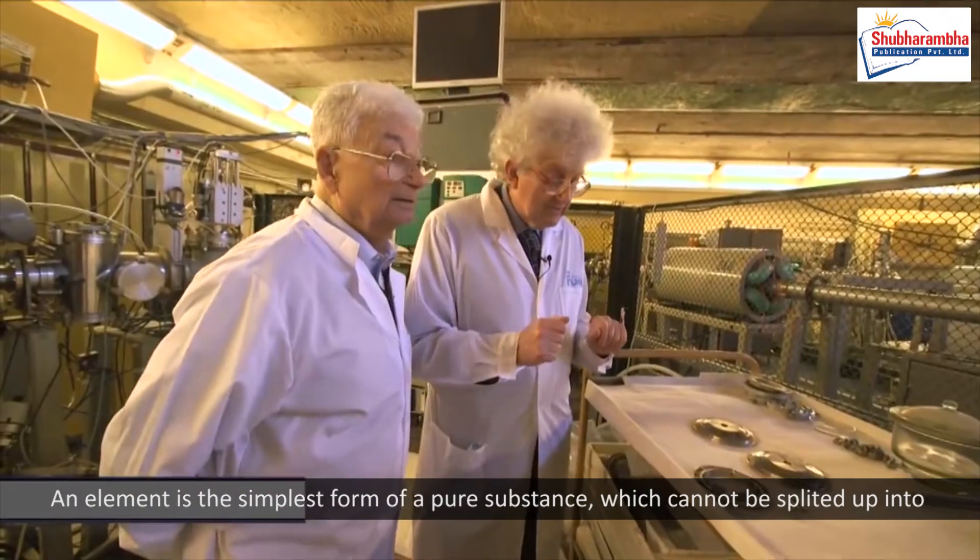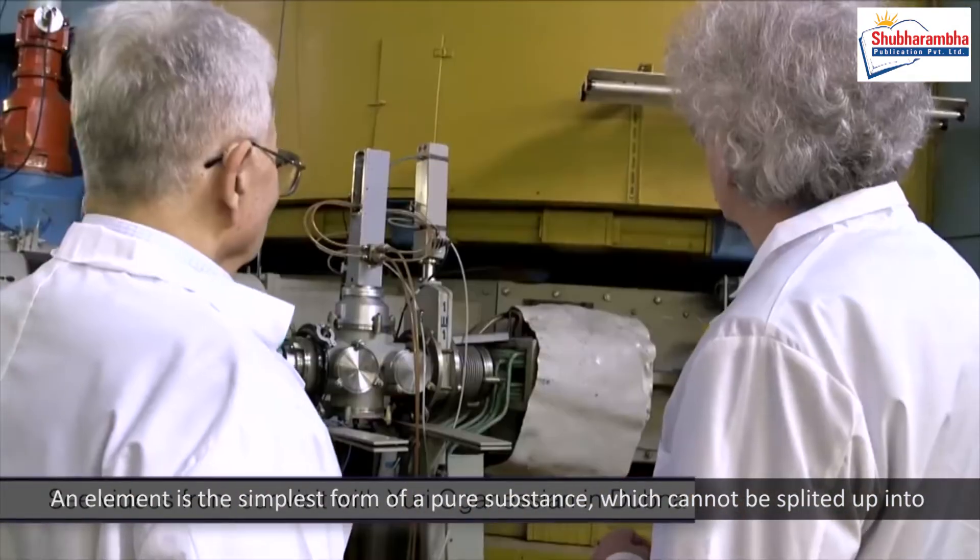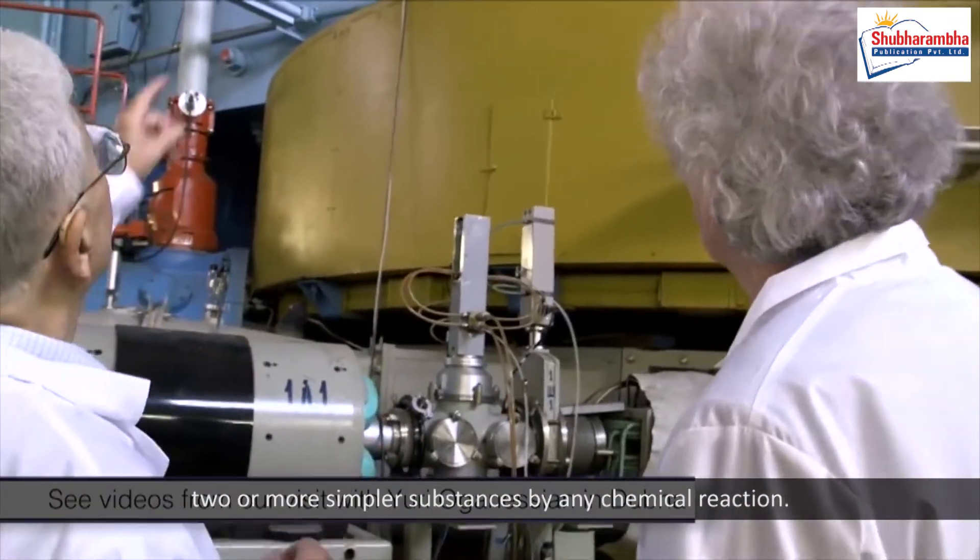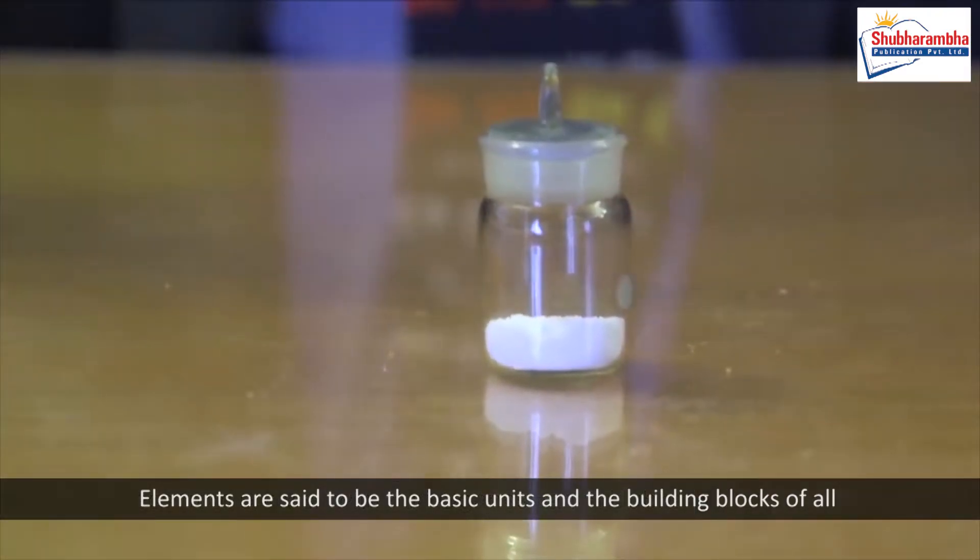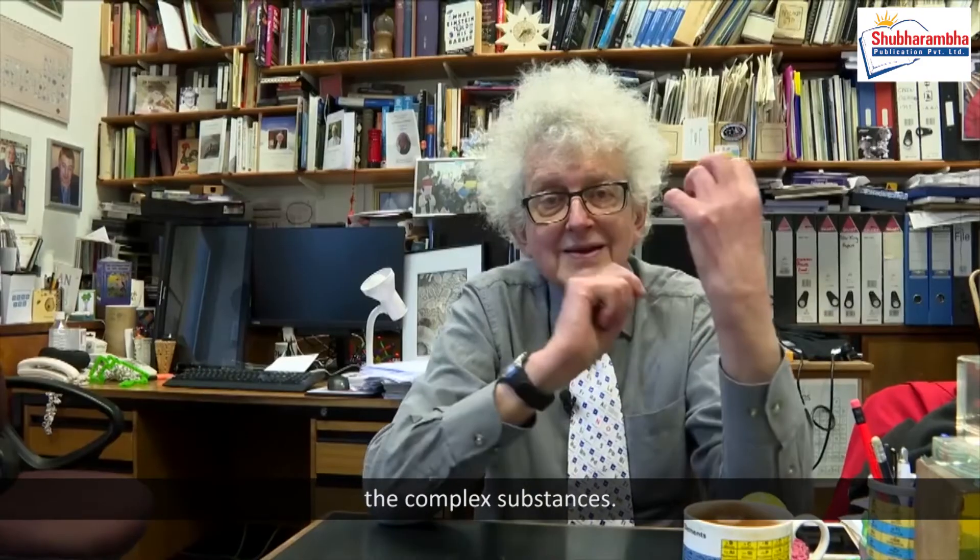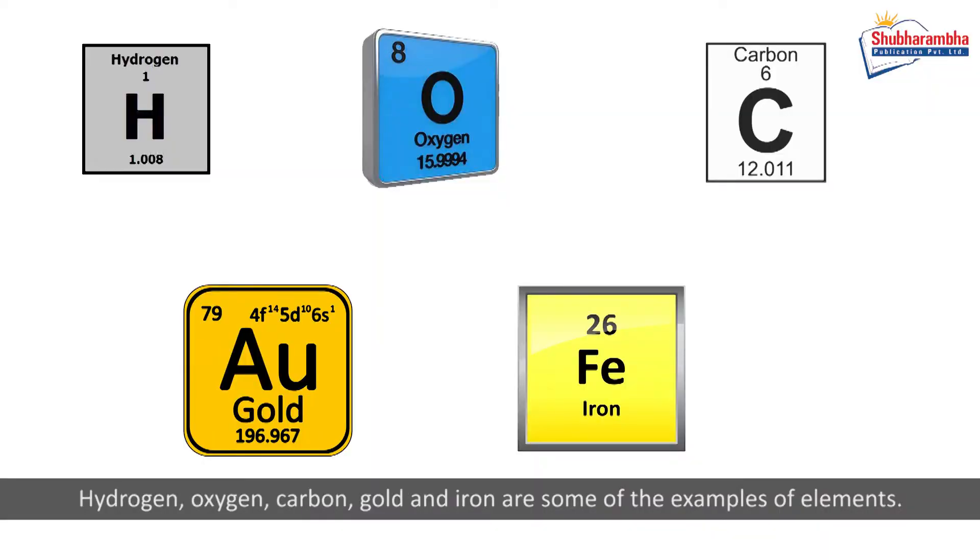Element. An element is the simplest form of a pure substance which cannot be split up into two or more simpler substances by any chemical reaction. Elements are said to be the basic units and the building blocks of all complex substances. Hydrogen, oxygen, carbon, gold, and iron are some examples of elements.